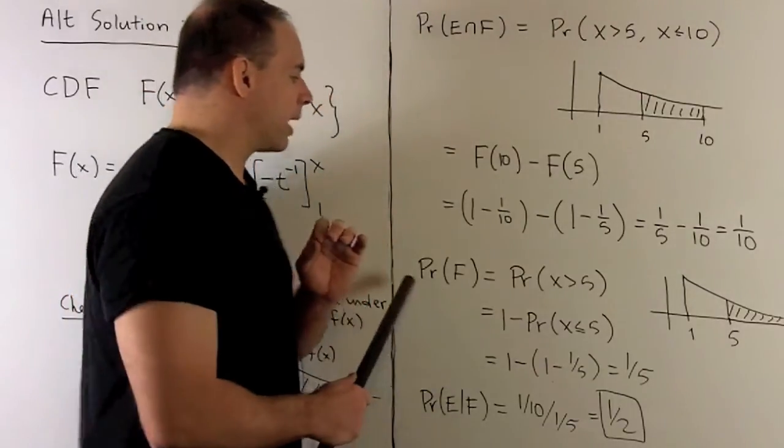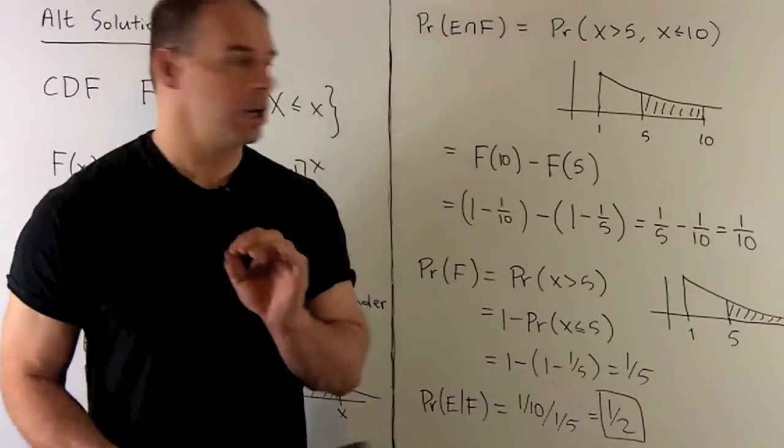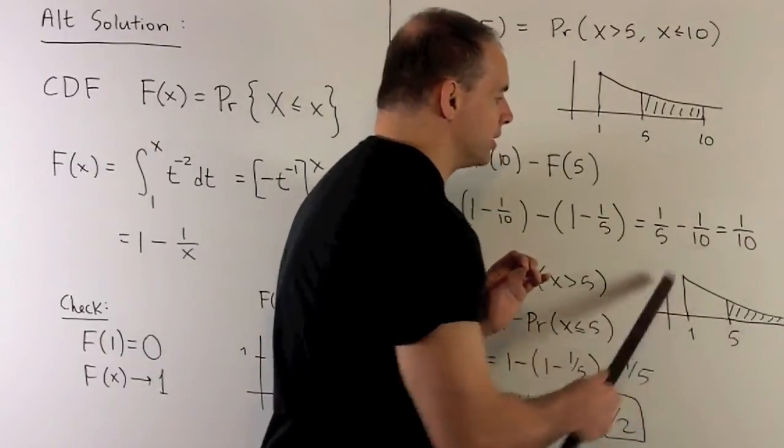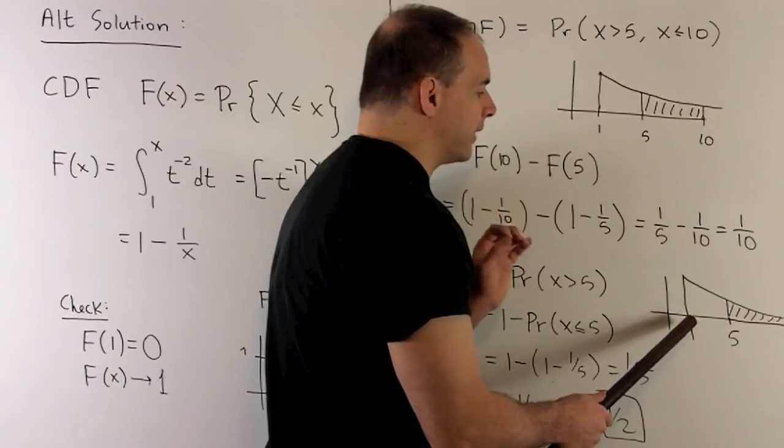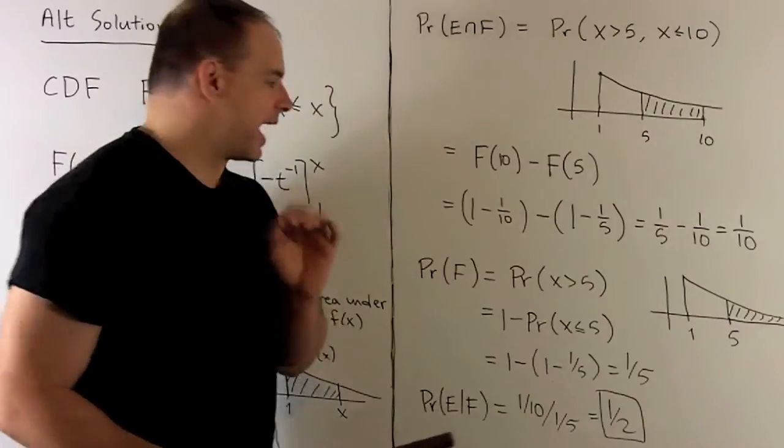Then, for the probability of F, we have the probability of x greater than 5. I draw the picture. So note, what do we have here? Well, we have the probability of the whole entire space, which is 1. Then we're gonna throw away the amount that's between 1 and 5. So, that's just gonna be our function evaluated at 5.